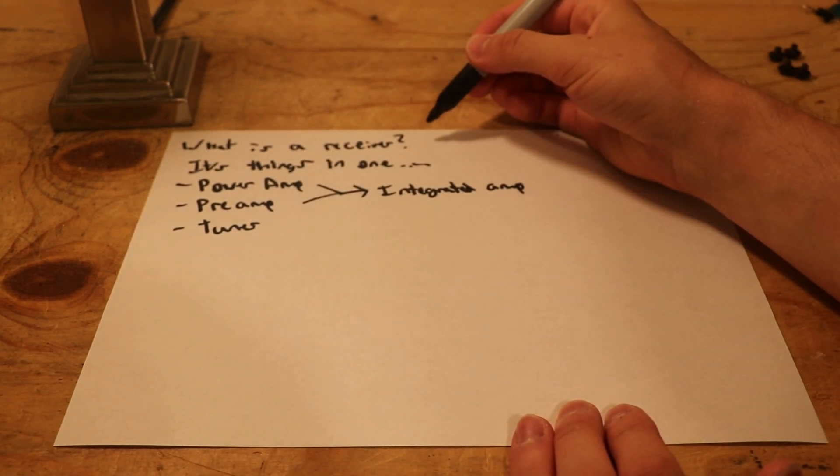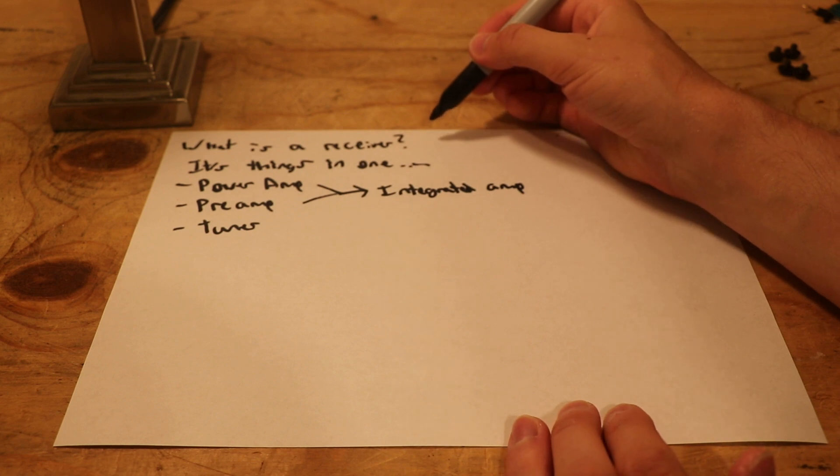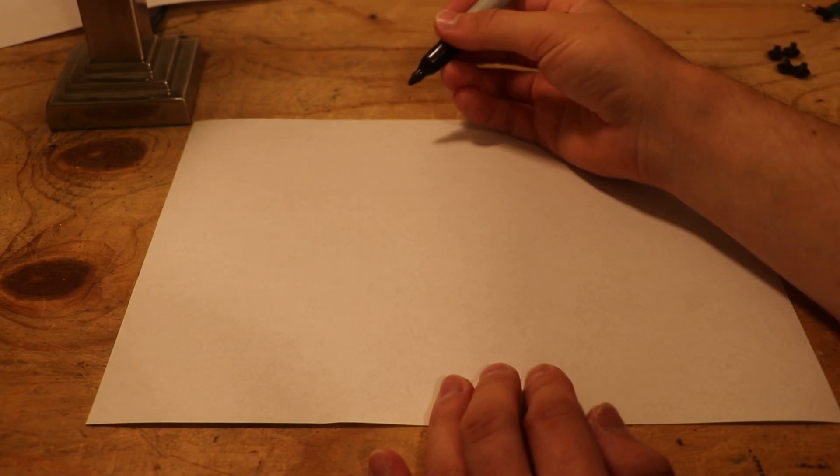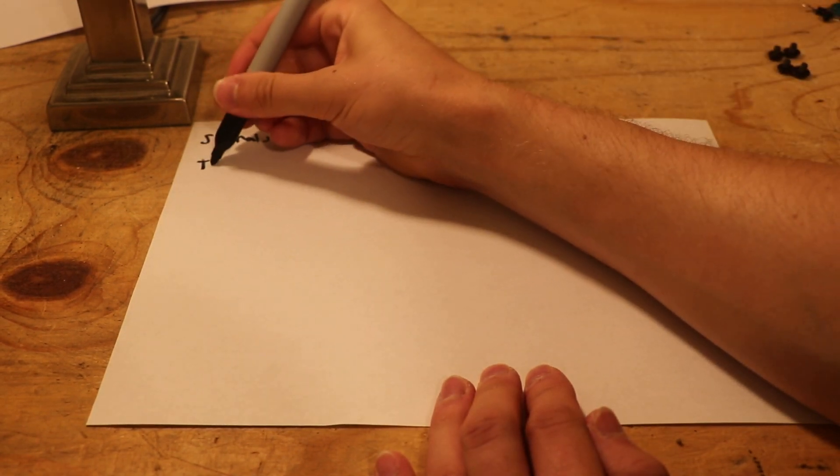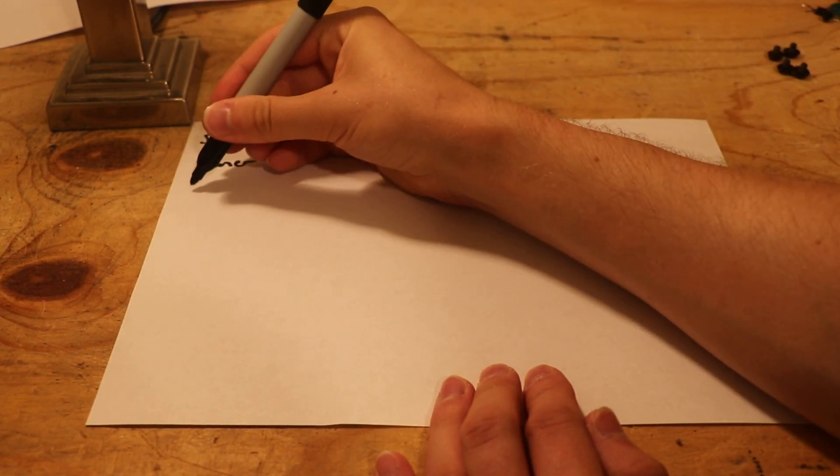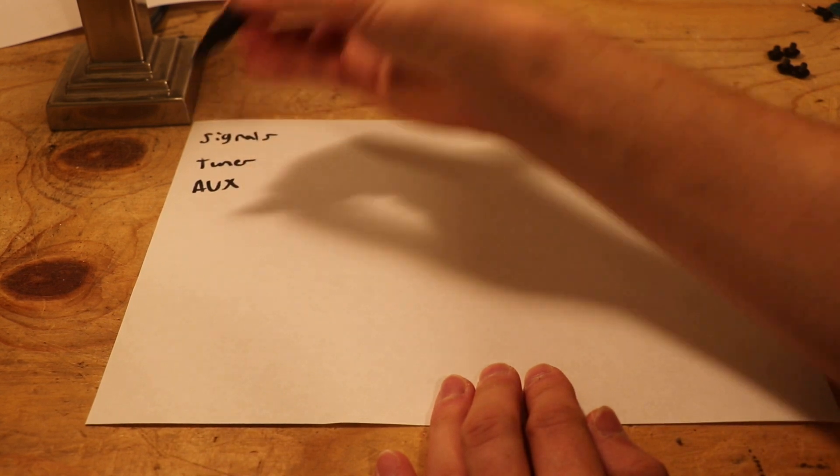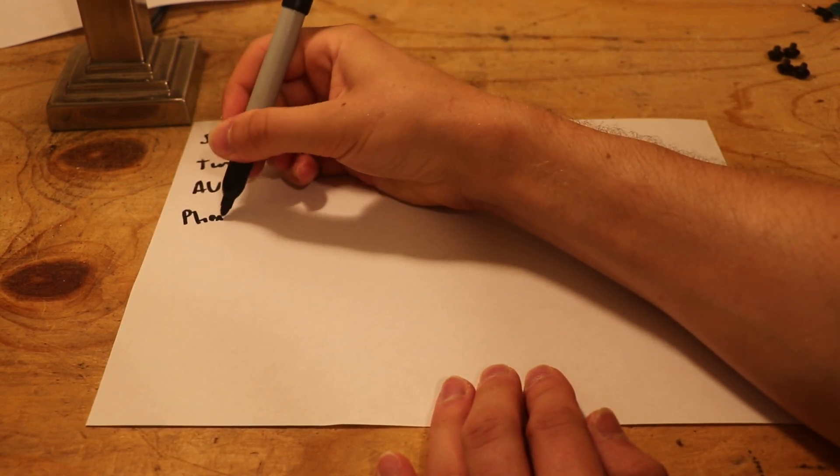So now that we know what a receiver is, let's talk about how it works. We're going to start with our signals. We have the tuner, we have aux, and we have phono.